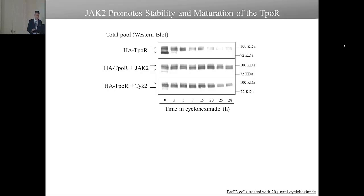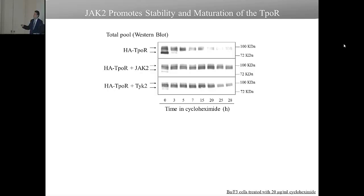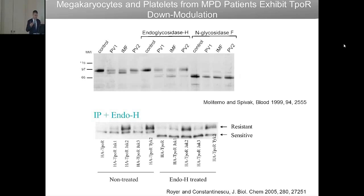How did we get involved in searching for a cause for myelofibrosis? It all started from work we had done on the synthesis of the thrombopoietin and erythropoietin receptors. We noticed that if we have a cell line expressing the thrombopoietin receptor and treat it with an inhibitor of protein synthesis, after five to seven hours the receptor is degraded — so the half-life is around there. But if we overexpress JAK2, the receptor is stabilized.